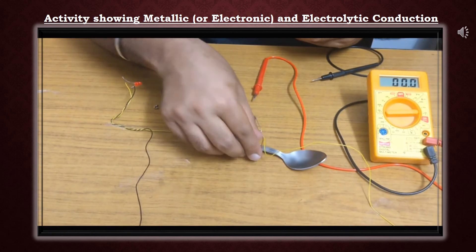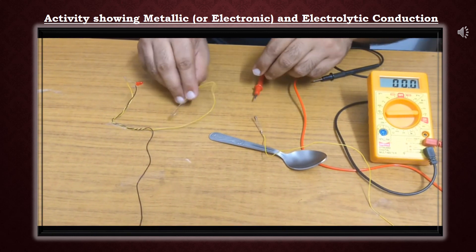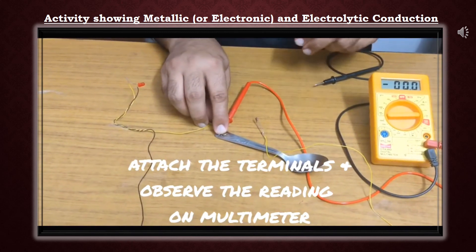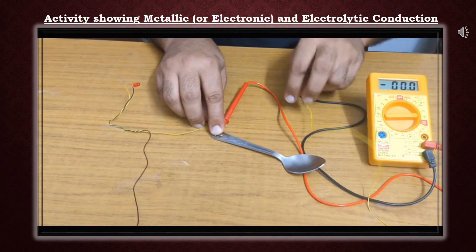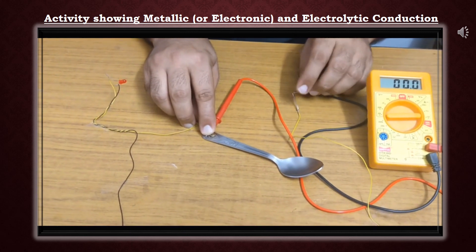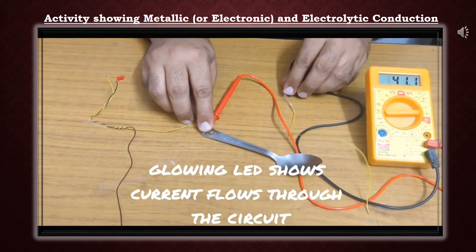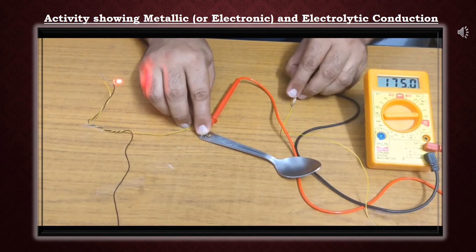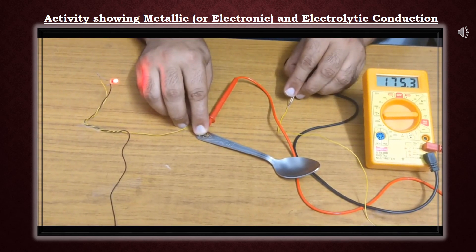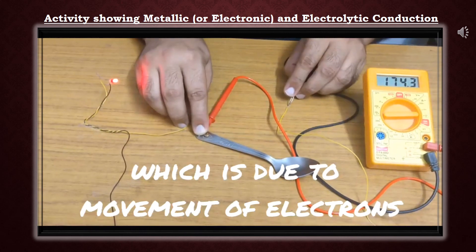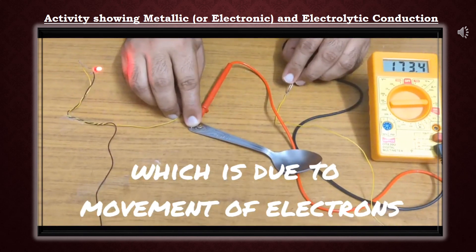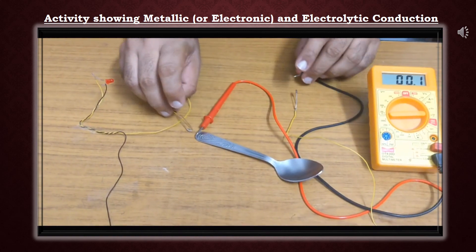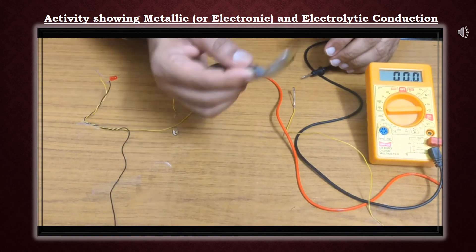We attach the terminals of the multimeter in series with the circuit. The glowing LED shows that current is flowing through the circuit, which is due to the movement of electrons in the metallic spoon. This shows metallic or electronic conduction.